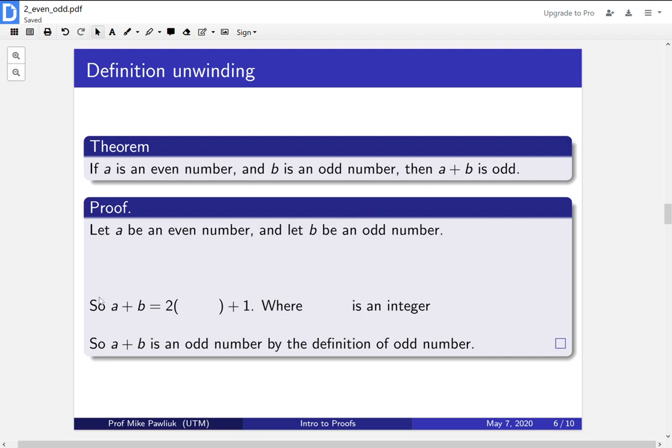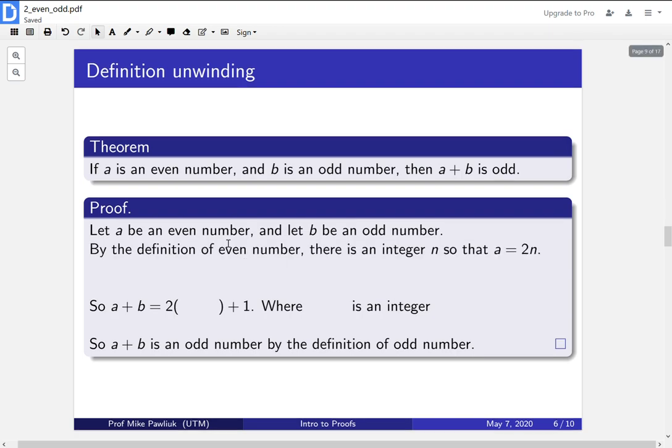Now our goal is to find that something, and it's not clear yet how we find it. So we've unwound our definitions from the bottom. We're basically as far as we can go. So now we go to the top and unwind our definitions from the top. What does it mean for a number to be even? Well, a number is even if there is an integer n such that a is 2 times n. What does it mean to be odd? It means there's an integer m such that b equals 2 times m plus 1. Now our goal is to find what this something should be, and we care about a + b. So we're in a position to add these two things together.